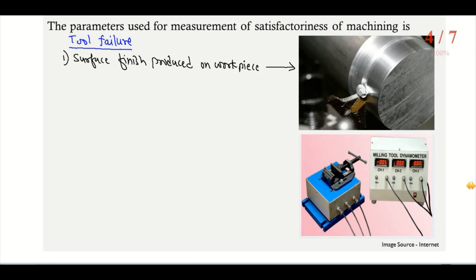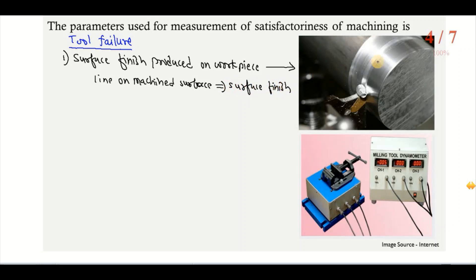When we are doing continuous operation using that same cutting tool on the workpiece, after some time lines are produced on the machined surface — engraved lines on the machined surface. It is then assumed that the surface finish is reduced and the tool has failed. If we are getting lines on the machined surface, we can say that the surface finish on the machined part is disturbed, which indicates tool failure.